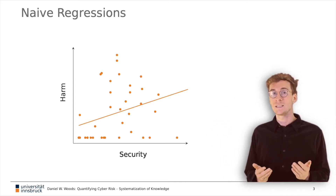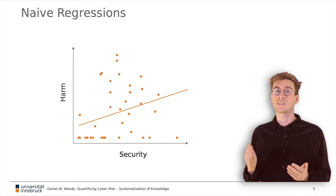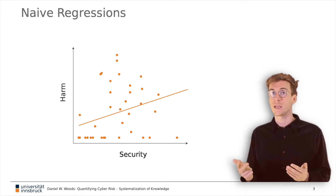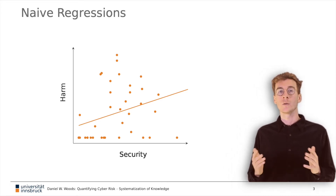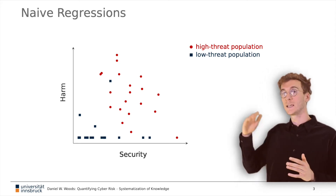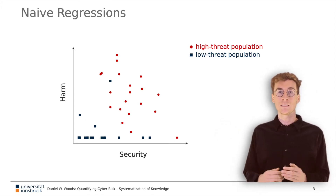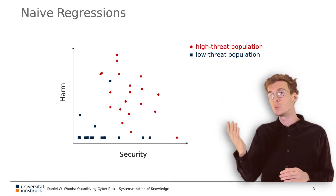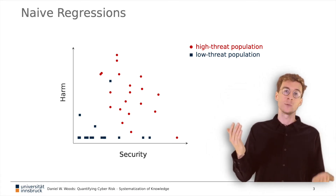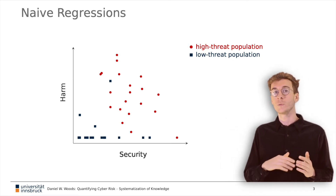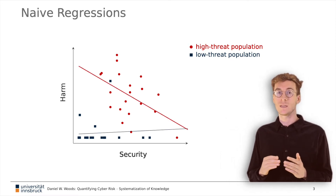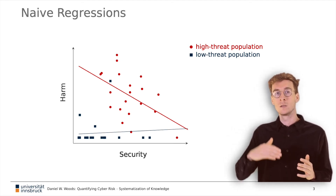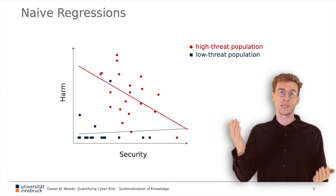Such entities face a higher threat level, and we use this term to capture the motivation, capability, and activity of adversaries. Separating these observations by threat levels illustrates this. Entities with higher threat level, which we depict in red, tend to invest more in security than entities with a lower threat level. If we fit a separate line of best fit for the high threat population, we see the result we expect: more security is associated with less harm.